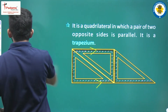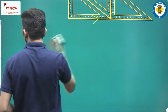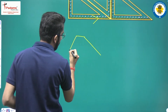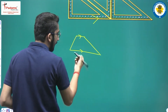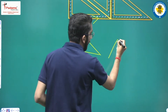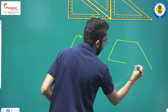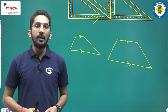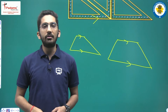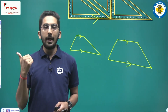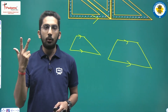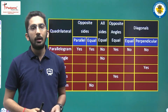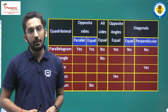You can draw a trapezium in many different ways — as long as one pair of opposite sides is parallel. So we have studied five types of quadrilaterals: rectangle, square, parallelogram, rhombus, and trapezium. Now let's fill a table based on the properties of each of these quadrilaterals.